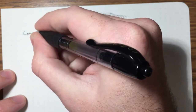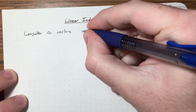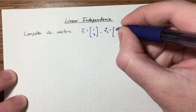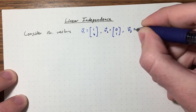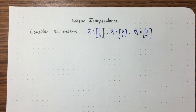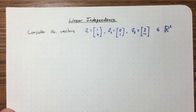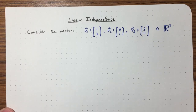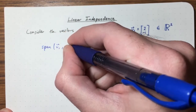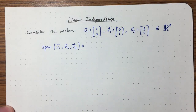Let's look at an example. Consider three vectors: V1 = (1, 0), V2 = (0, 1), and V3 = (2, -1). We're in R2 because our vectors have two components. If I gave you these vectors, what would you say the span of these three vectors is — what are all linear combinations I can obtain by starting with these three vectors?